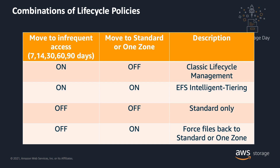With the introduction of the new lifecycle policy, there are four combinations of lifecycle policies supported. Classic lifecycle management policies where you access your file system as a hybrid file system is still supported. EFS Intelligent Tiering is a combination of policies to move files back and forth between the performance-optimized and cost-optimized storage classes. You can also choose to keep your files entirely in standard. And lastly, you can move files back to standard from infrequent access without a corresponding age-off policy — you do this if you want to force-promote files to standard.